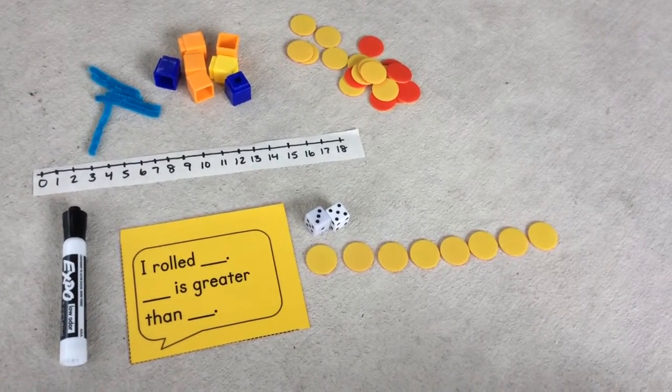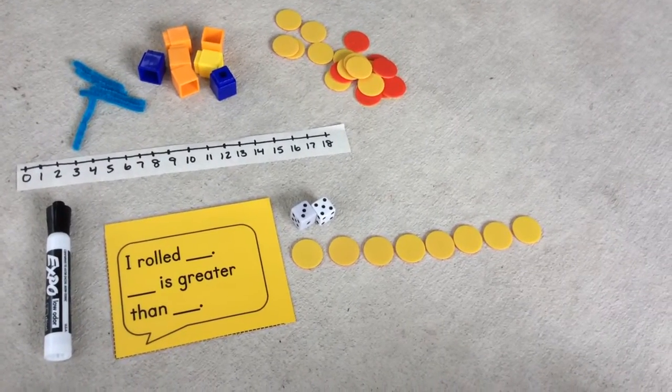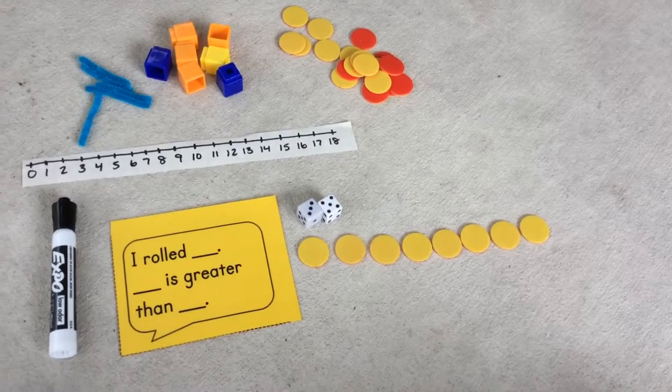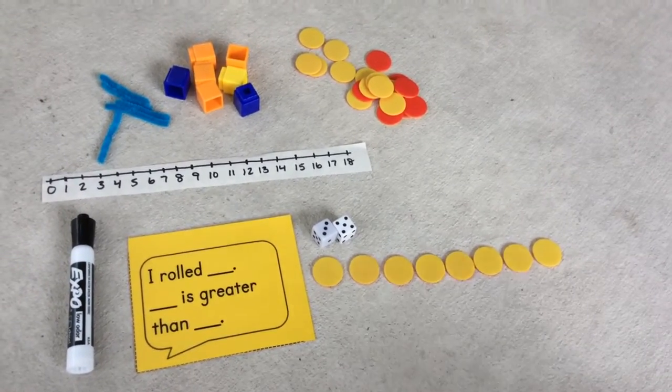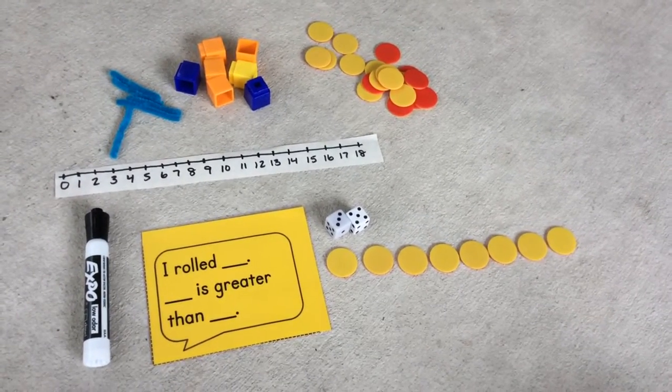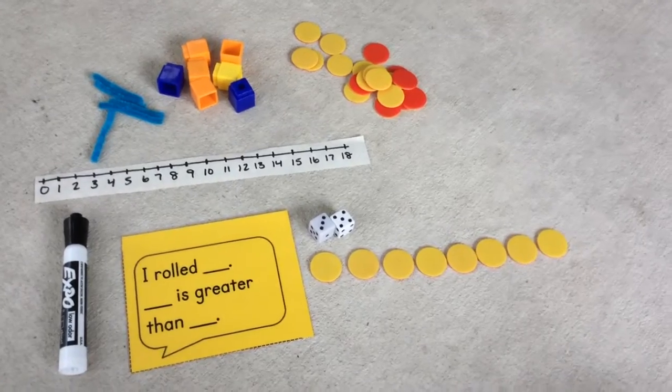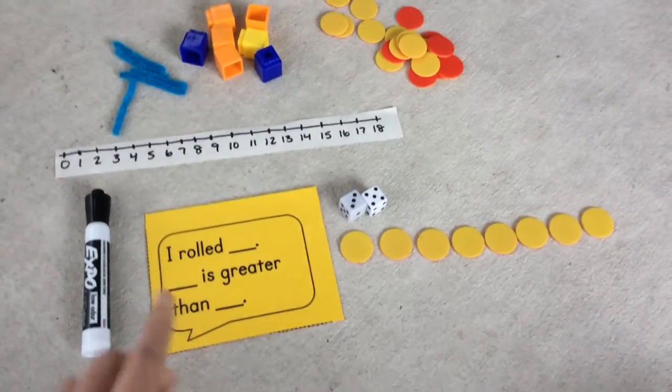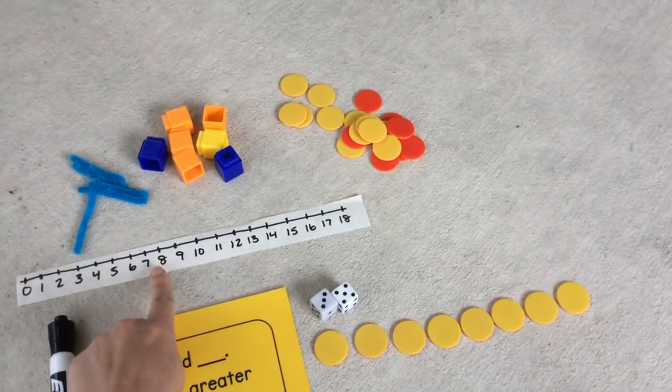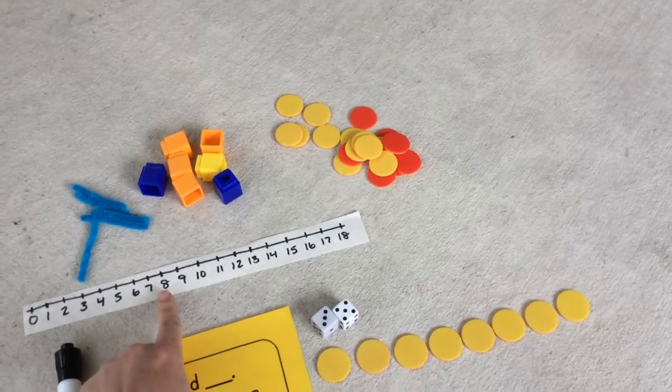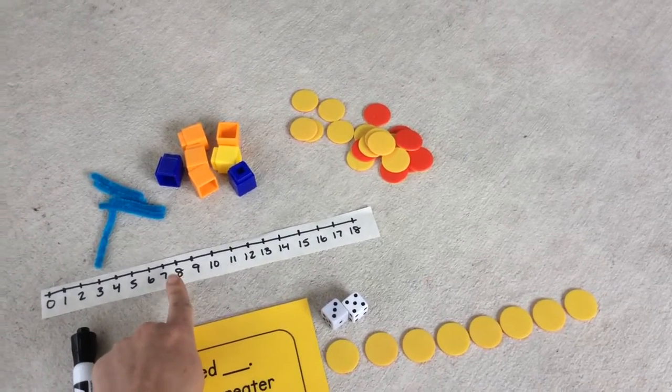The next thing you do is make a set of counters that is greater than the number you rolled. Remember, greater means more than. So now I can look at my number line. Here is the number eight, what I rolled. I want to make a set that is greater than eight.